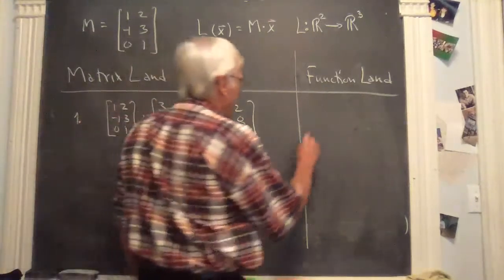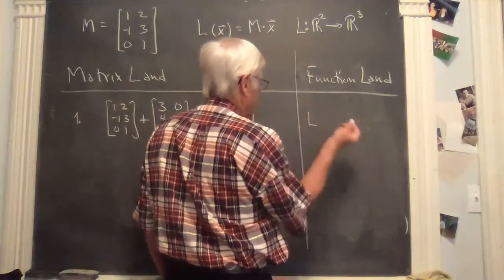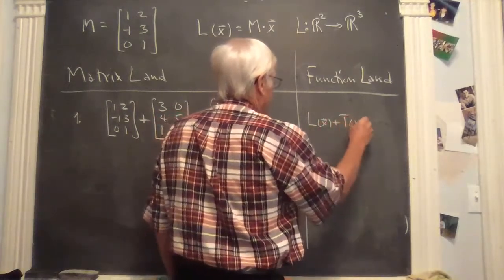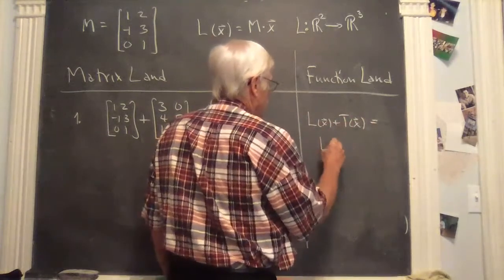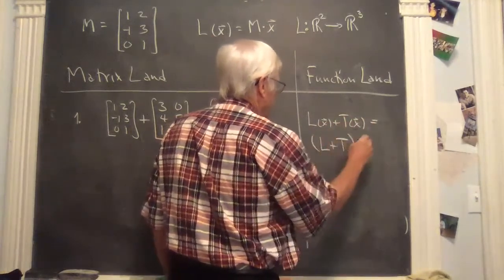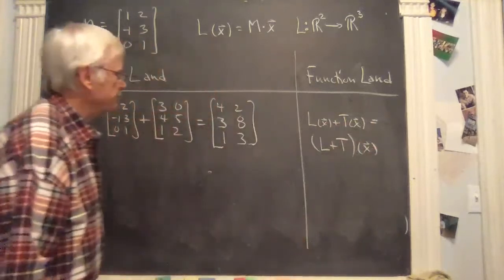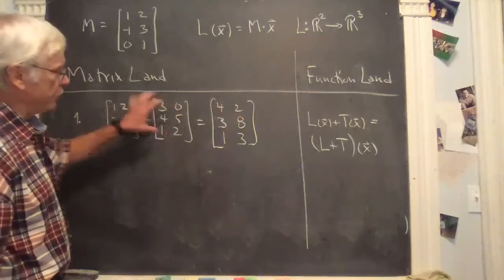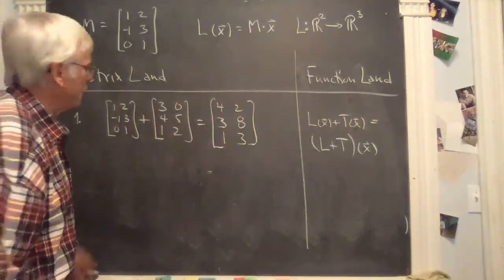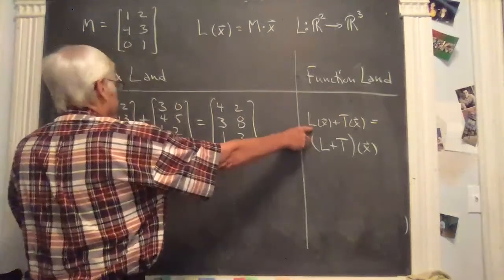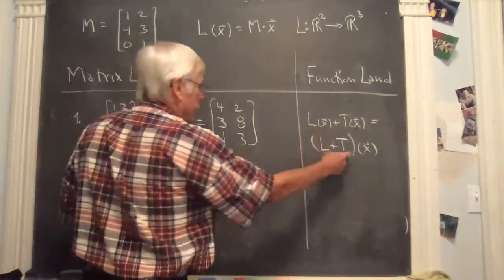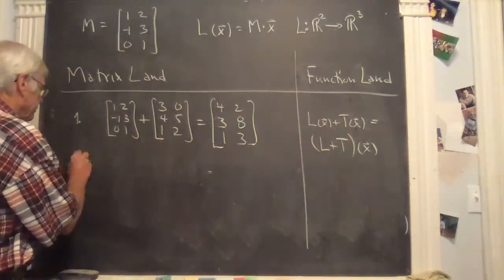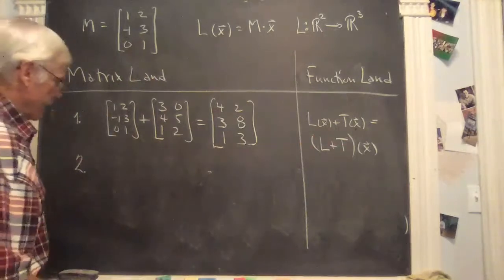This reflects the fact that if you take two linear transformations — these functions are actually two functions — and take L of x plus T of x, this will equal the added function evaluated at x. This represents the sum of the two functions. Each one of these matrices represents the individual function. L is represented by the first, T is represented by the second, and this represents the sum of those two functions, what it does to an x. And subtraction works the same way.